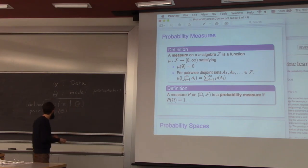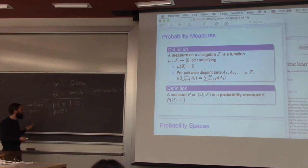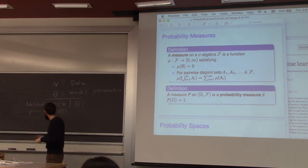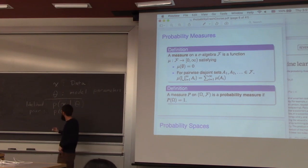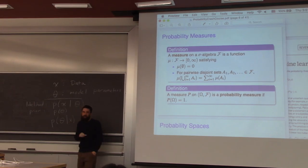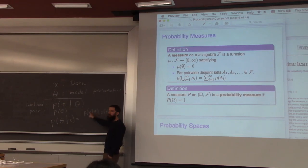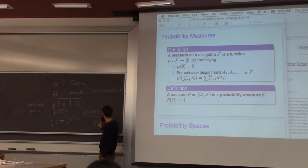In Bayesian analysis, we say our model parameters are also random variables, so we need a probability distribution for them. The goal of inference is now: what is the probability of our model parameters given the data we've observed — P(theta|x)? We need to take our likelihood and flip the conditional, which is done using Bayes' rule: P(theta|x) is proportional to P(x|theta) times P(theta) divided by the total probability of the data P(x). This is what we call the posterior.